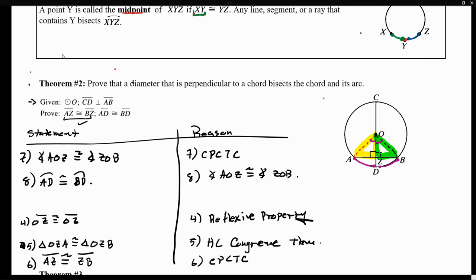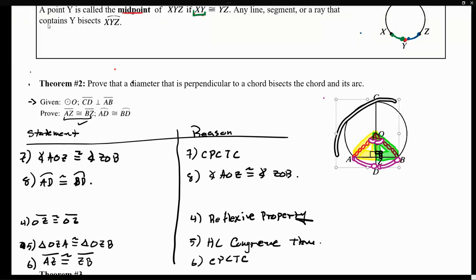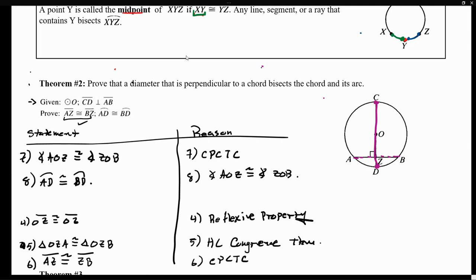What we have shown is that for any circle, if the diameter of the circle is perpendicular to a chord, then the diameter will cut the chord in half — AZ is congruent to ZB. Also, the diameter will cut arc AB into two equal arcs, with arc AD congruent to arc DB. Given any diameter, if the diameter is perpendicular to any chord, then the diameter cuts the chord into equal segments and also cuts the arc into two equal segments. This is a very important theorem.